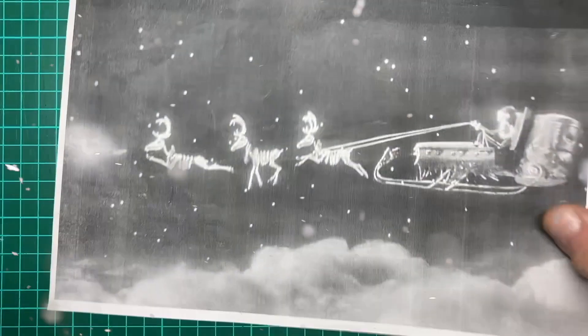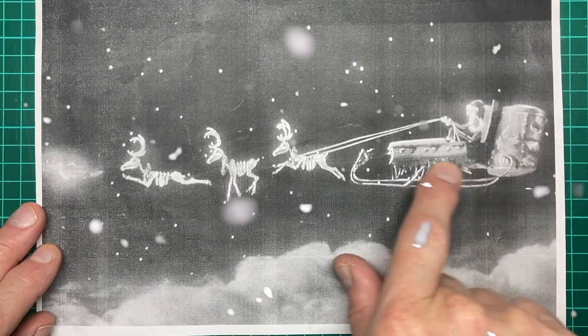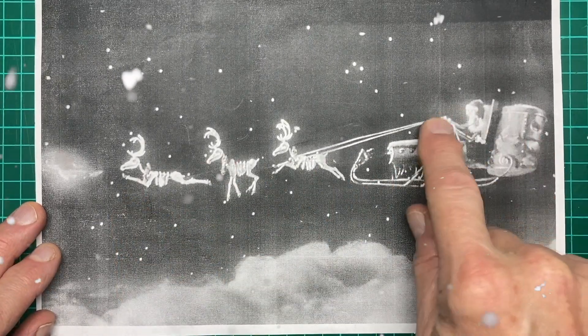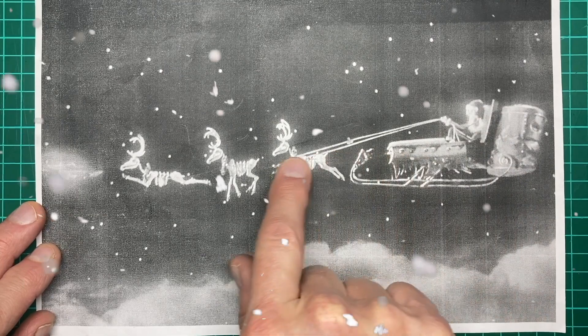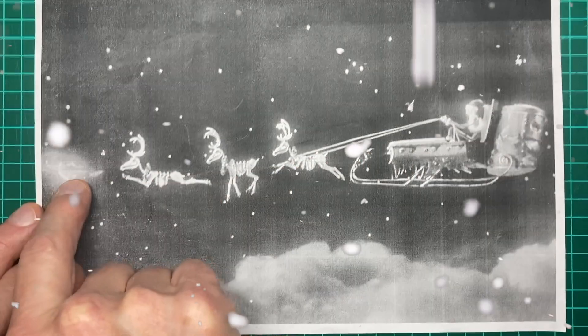Hello everyone and welcome back to Murph's Models. Today we're continuing our series on Jack Skellington's Christmas sleigh with his reindeer and Zero at the front.